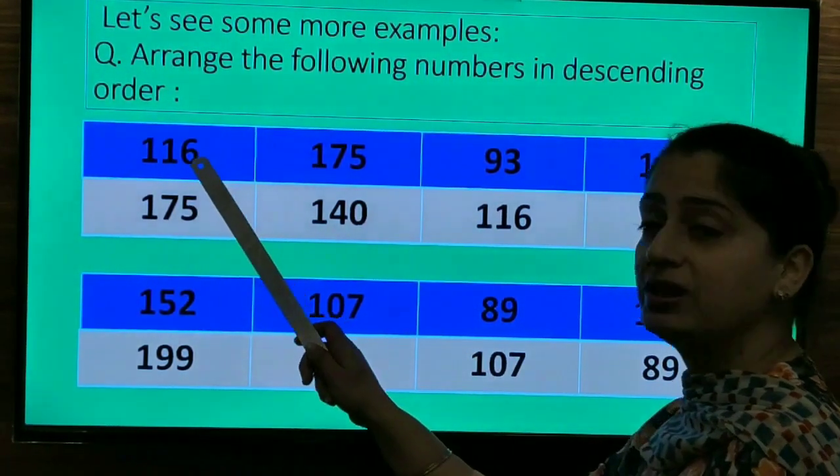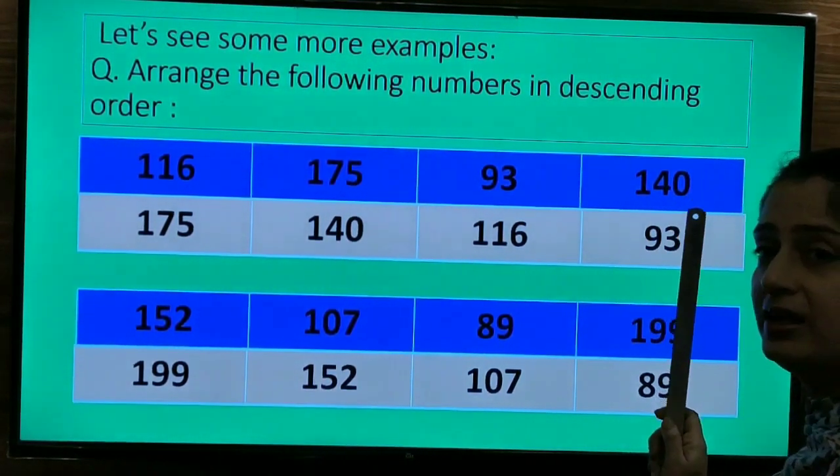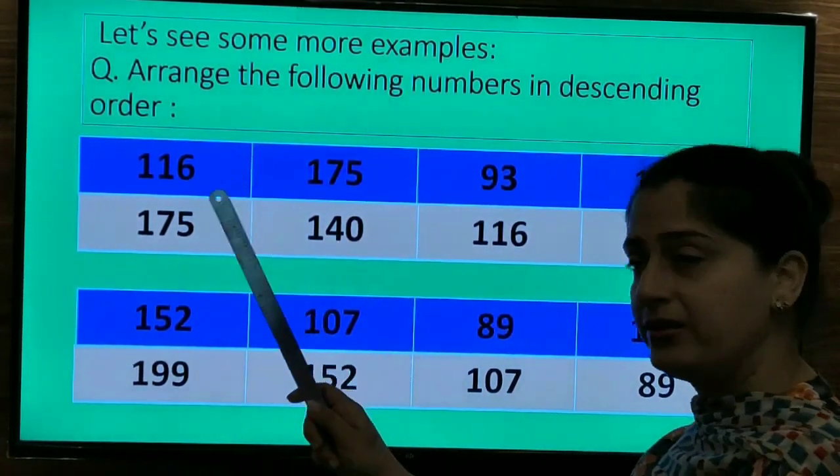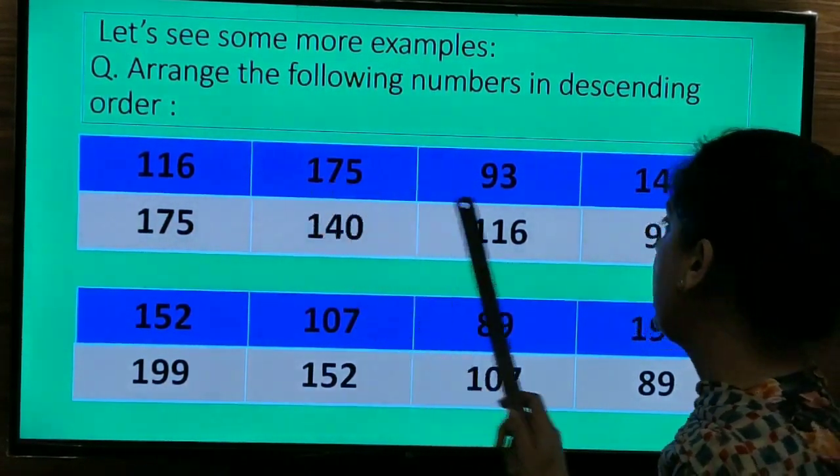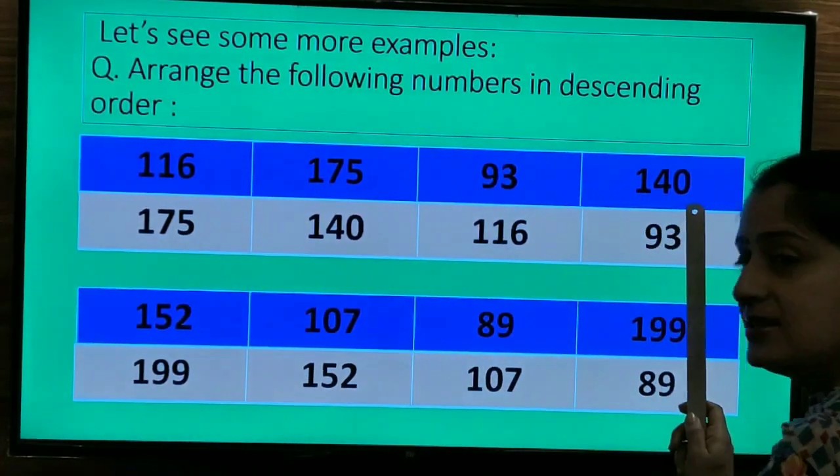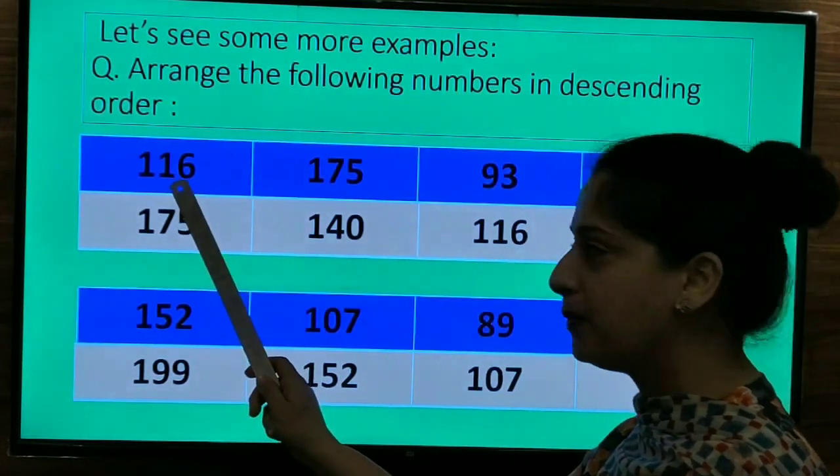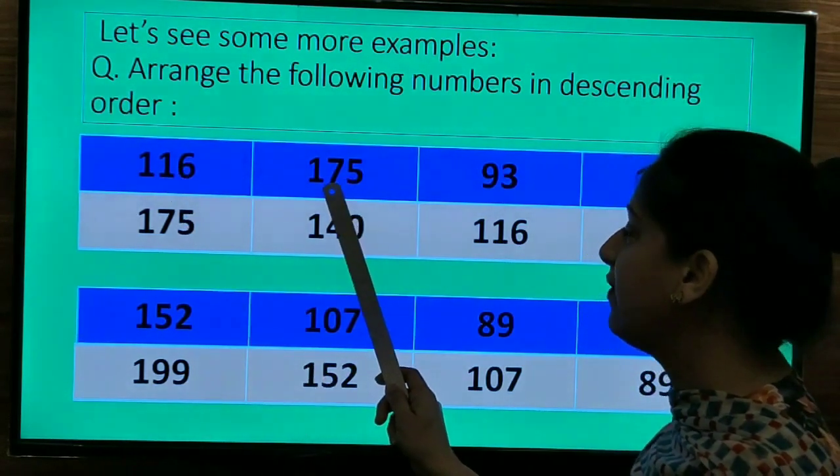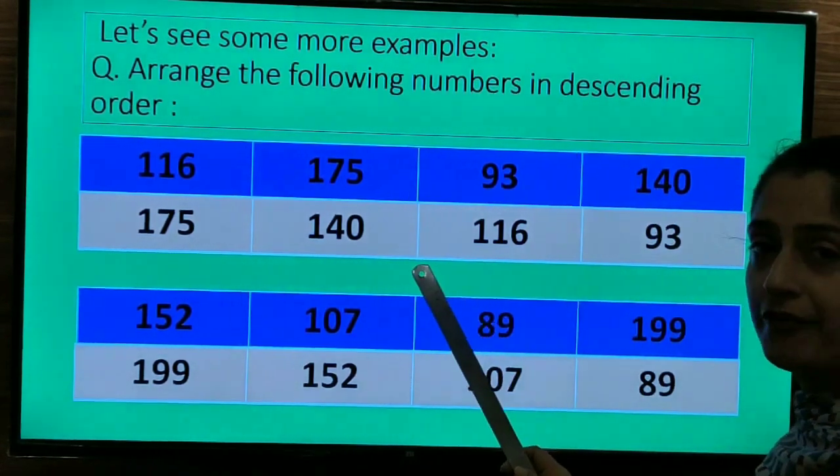Now we have to compare the 3 numbers. So we have 116, 175 and 140. So we will see the leftmost digit of the number. Here it is 1, 175 again 1 and 140 is again 1. So they all are same. So we will see the next digit, the number at the tens place. 1, here it is again 1, here it is 7 and in 140 it is 4. So which one is the biggest of all?